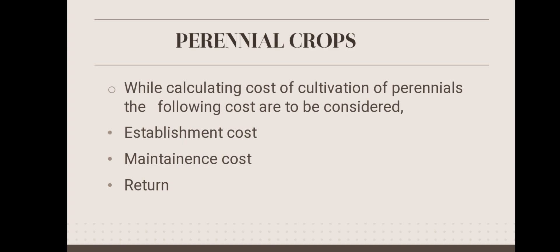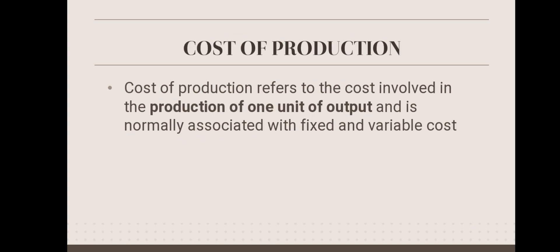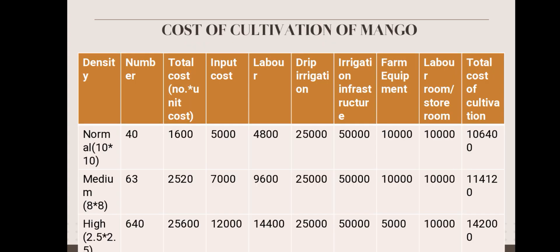Next is about perennial crops. Calculating cost of cultivation of perennial crops can be done by considering certain elements like establishment cost, maintenance cost, and return. Next is about cost of production. Cost of production refers to the cost involved in the production of one unit of output and is normally associated with fixed and variable cost.